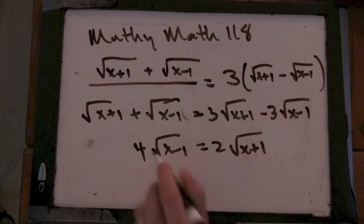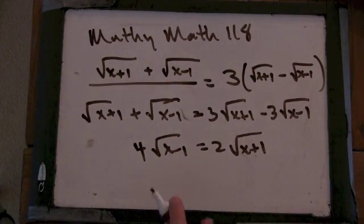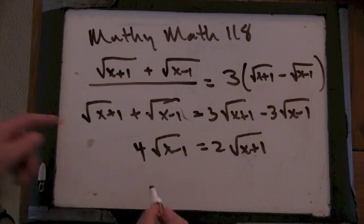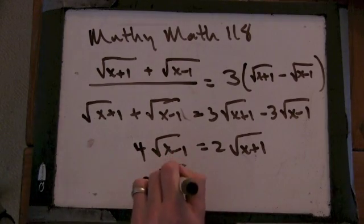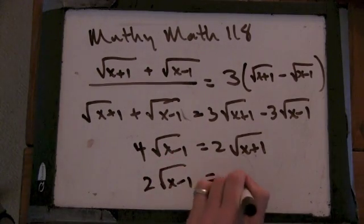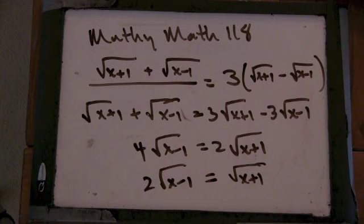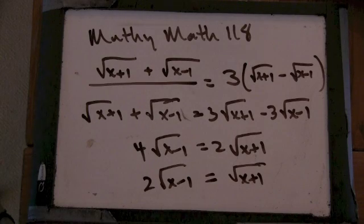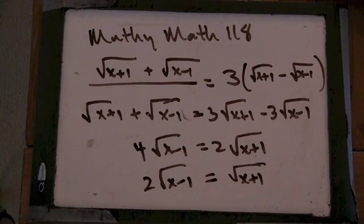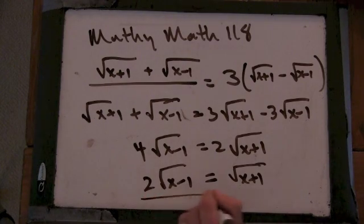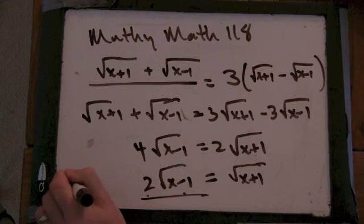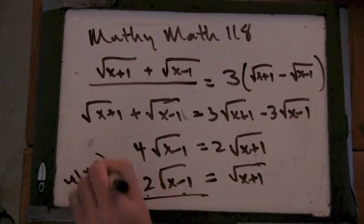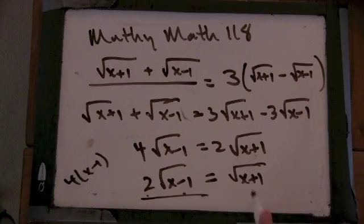What would you do now? I'll divide by 2. The square root of x minus 1 equals the square root of x plus 1. Now I'll square everything. I get 4x minus 4. When you square this side you've got to square the 2 and that, so that's 4 times x minus 1, equals x plus 1.